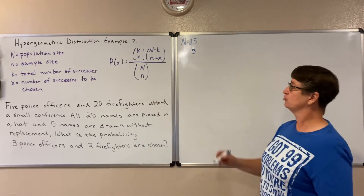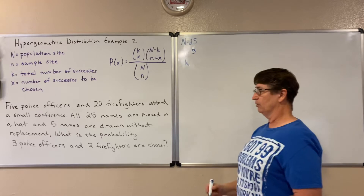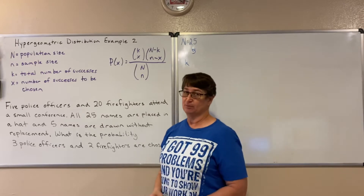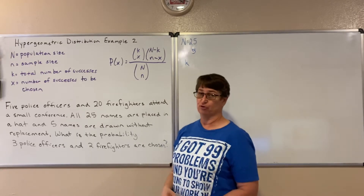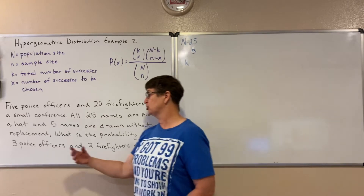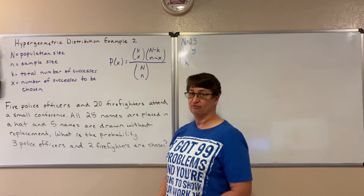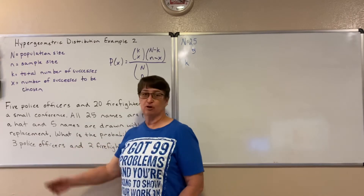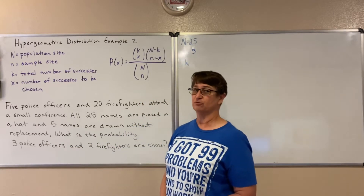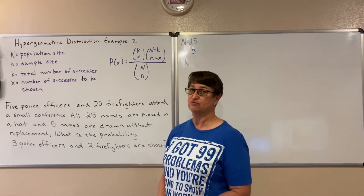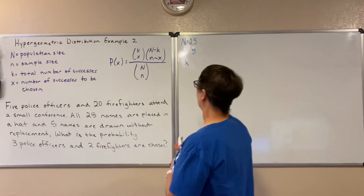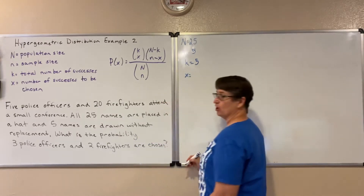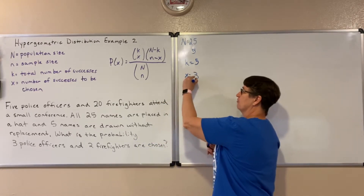Then our total number of successes — this one's a little bit weird because we have two different ones we could choose. We could either choose our police officers to be our successes or we could choose our firefighters. In the end it doesn't actually matter. We'll use police officers as our successes — but firefighters, you're just as much of a success. So our total number of successes is the five police officers and from those we are choosing three.